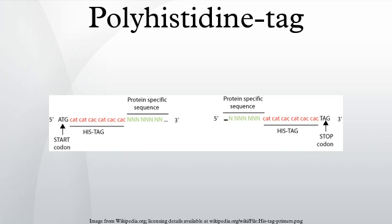Polyhistidine tags are often used for affinity purification of polyhistidine-tagged recombinant proteins expressed in Escherichia coli and other prokaryotic expression systems. Bacterial cells are harvested via centrifugation and the resulting cell pellet lysed either by physical means or by detergents and enzymes such as lysozyme, or any combination of these. The raw lysate contains the recombinant protein among many other proteins originating from the bacterial host. This mixture is incubated with an affinity resin containing bound bivalent nickel or cobalt ions, which are available commercially in different varieties.